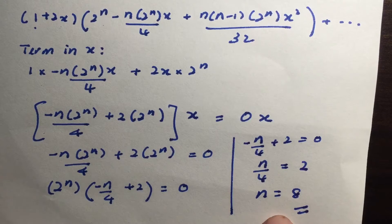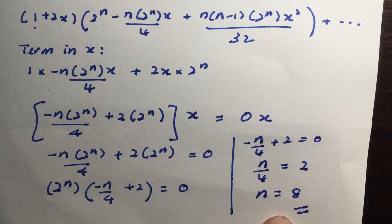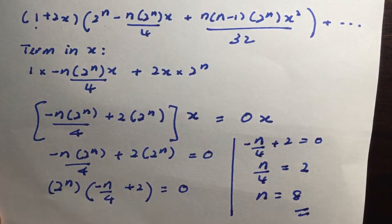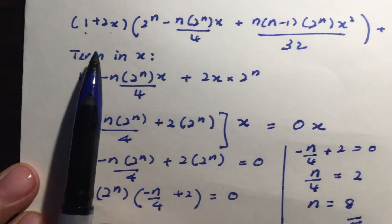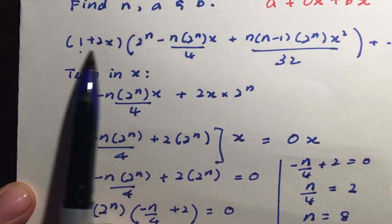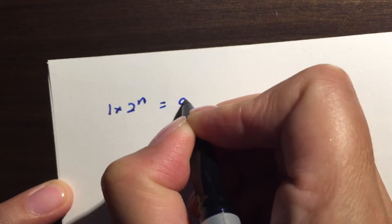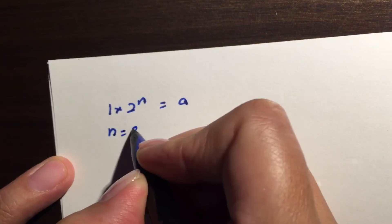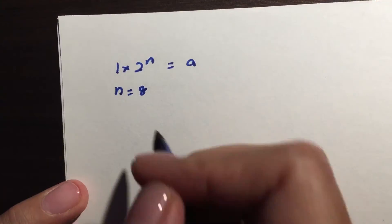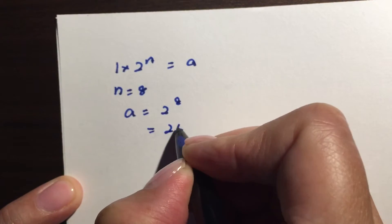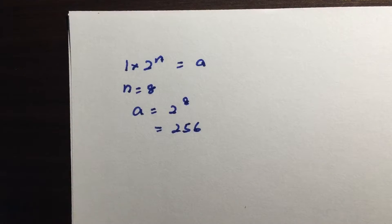So once we have n equals to 8, the other terms will come in quite handy because they already told you that a will be the constant term. And as you can see from this expansion here, the only way for you to get a constant term is to have constant multiplied by constant. So I have 1 times 2 to the power of n will give me a, which is a constant. Now remember, we've already figured out that n is equals to 8. So a is the same as 2 to the power of 8, you should give me 256. So there we have it. So we have 256.